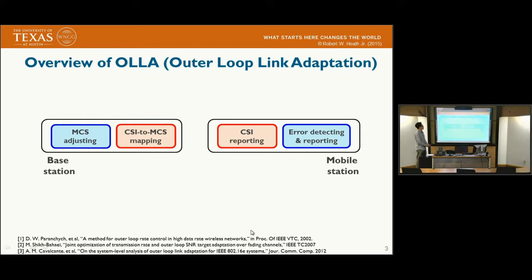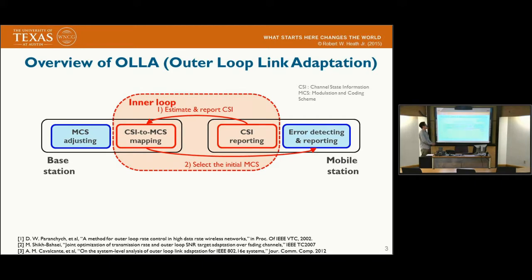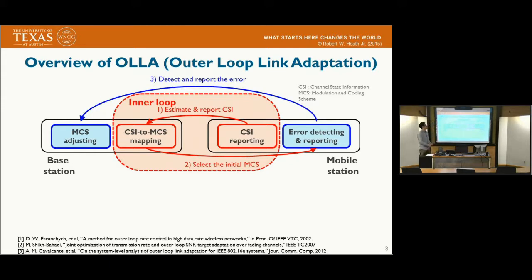One of the well-known rate control techniques is OLLA, known as the Outer-loop link adaptation. The process is like this: the mobile station estimates the channel and reports the channel state information to the base station. Then the base station selects the initial MCS level — MCS means the modulation and coding scheme — and starts data transmission. This is called the inner-loop link adaptation. But there is a main drawback: it is too highly dependent on the accuracy of channel state information, so the MCS level selection can be too aggressive or too conservative. To overcome this drawback, the outer-loop link adaptation concept appeared.